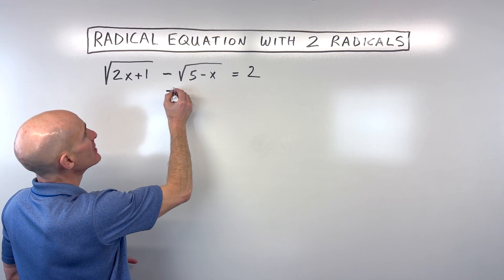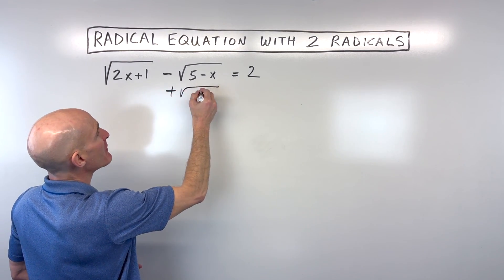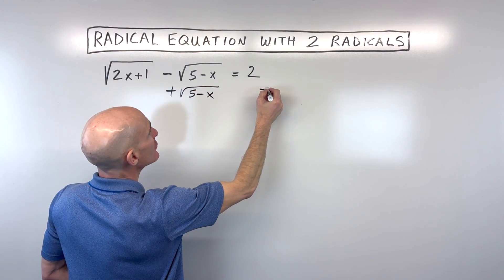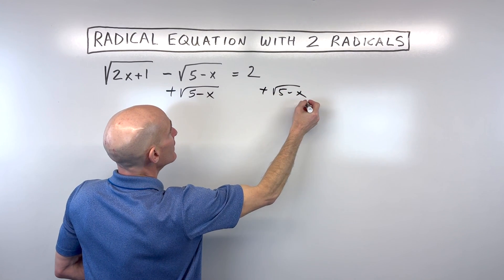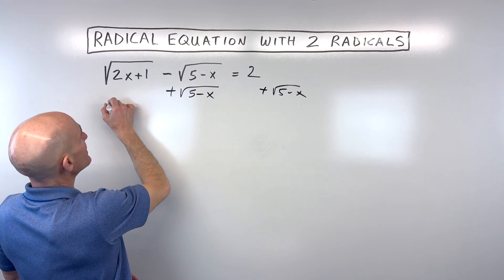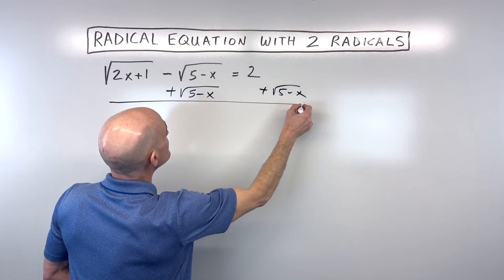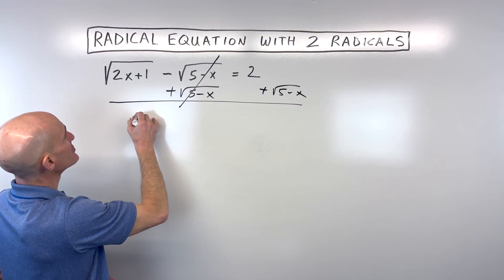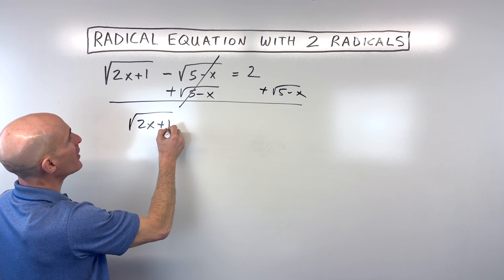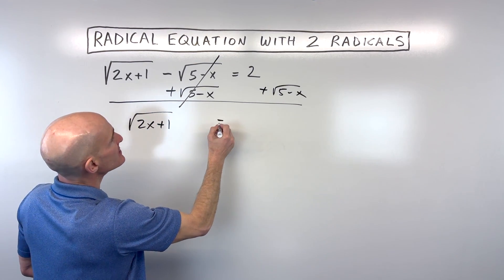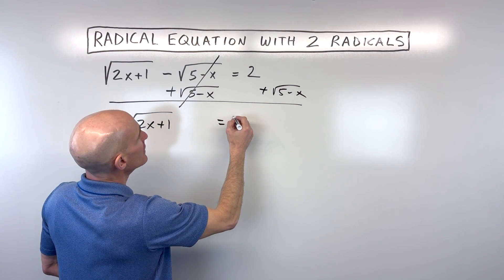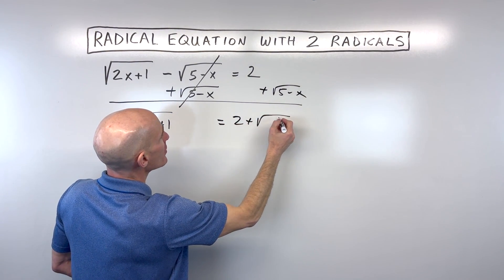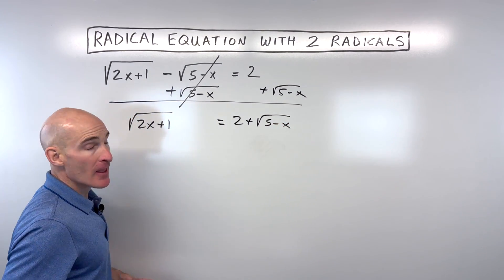I'm going to add the square root of 5 minus x to the other side of the equation. These are going to cancel, and we're left with square root of 2x plus 1 is equal to 2 plus the square root of 5 minus x.